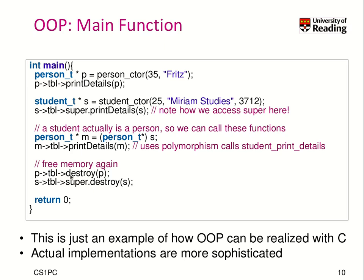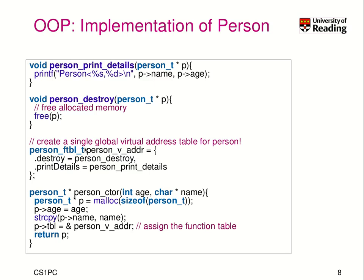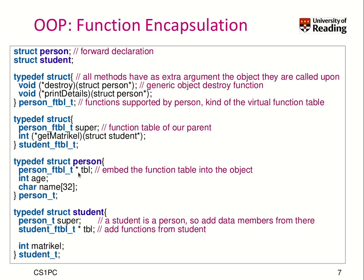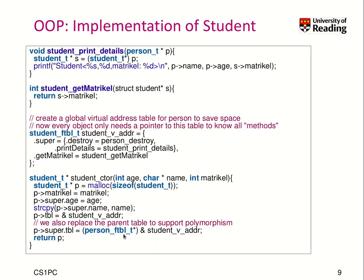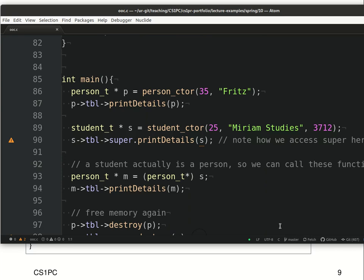This is one of many options to realize object-oriented programming in C, and some implementations are more sophisticated. The key idea is placing data and function pointers in the right positions in the structures, so the first element is always for the super class. When you cast a student function table to a person table, the memory layout matches as expected, allowing easy casting. The code is available in our repository.